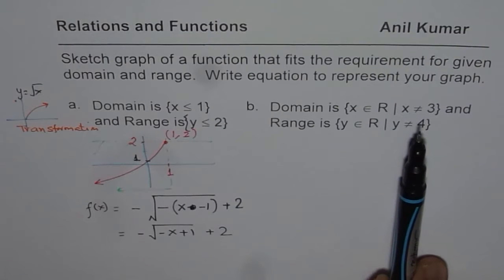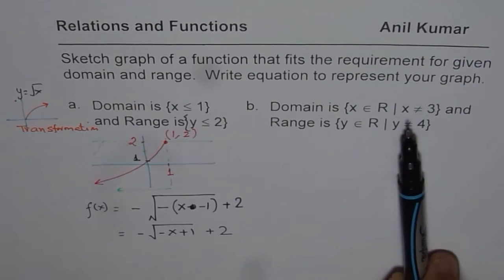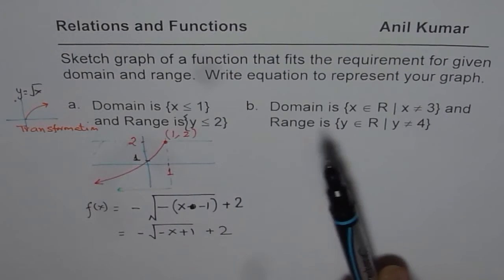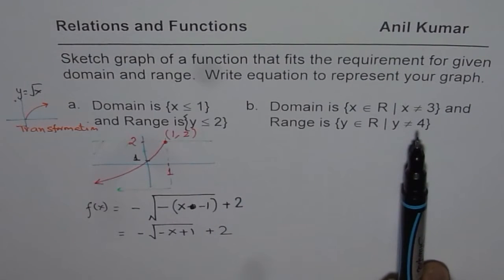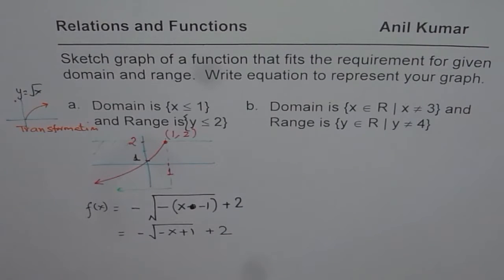What are we talking about? We are saying domain has a restriction, it cannot be 3, range has a restriction, it cannot be 4. And all of the real numbers for domain range are possible.